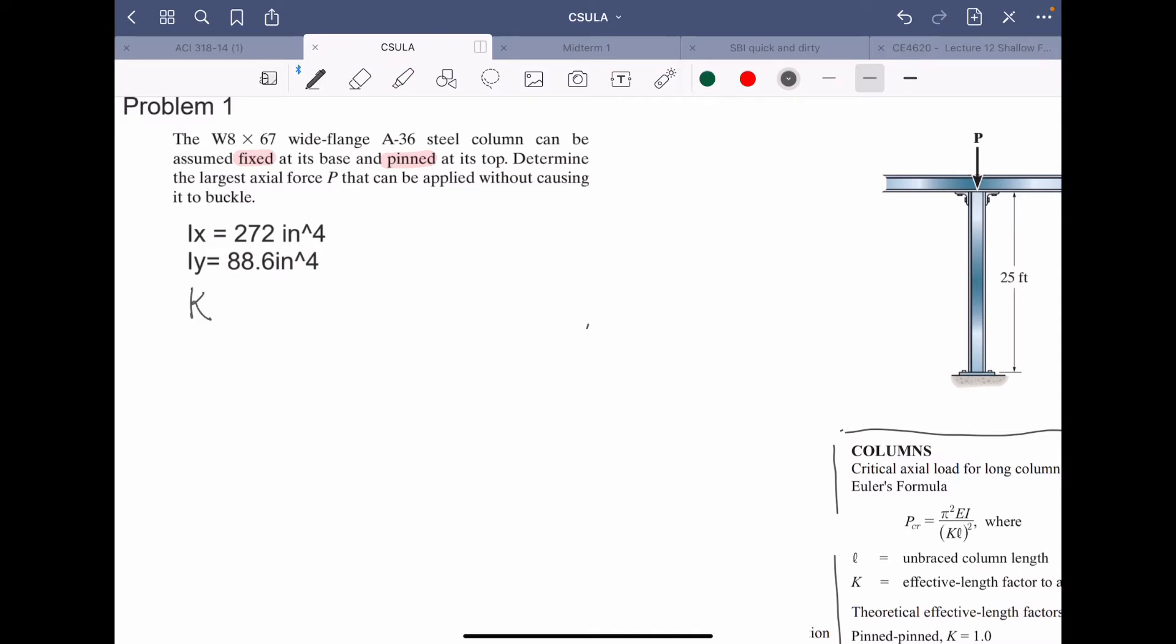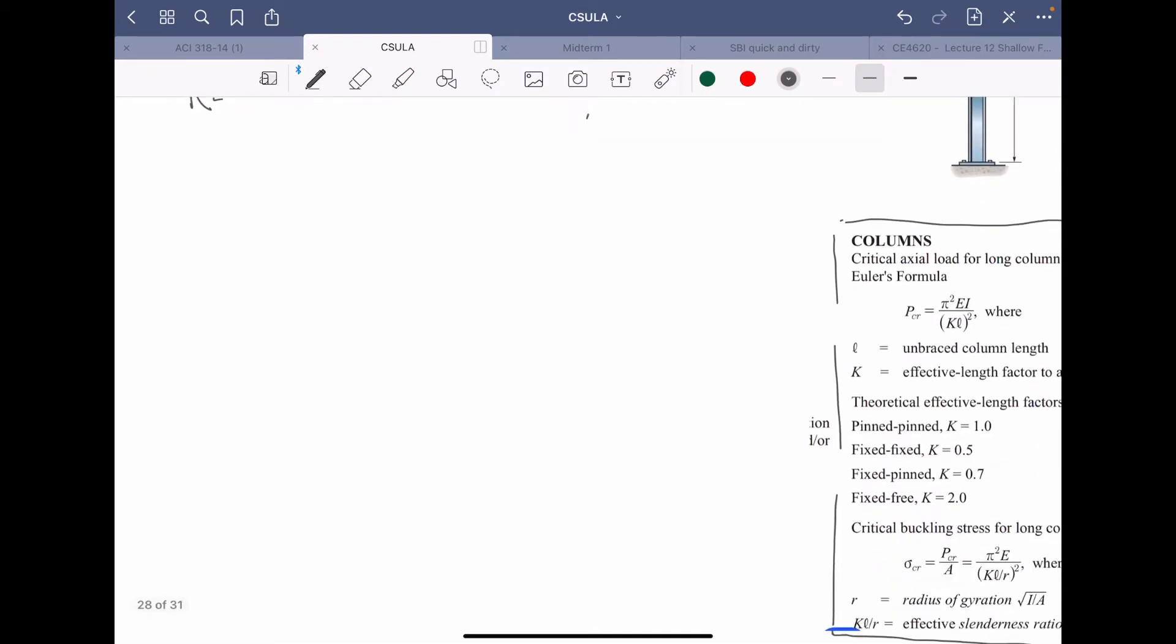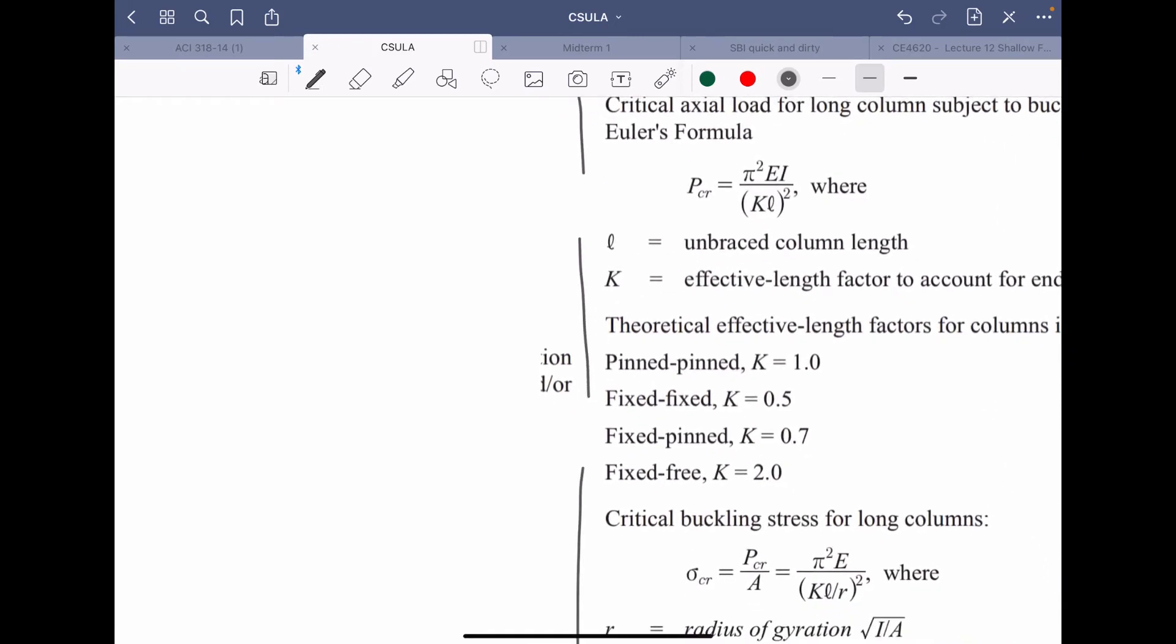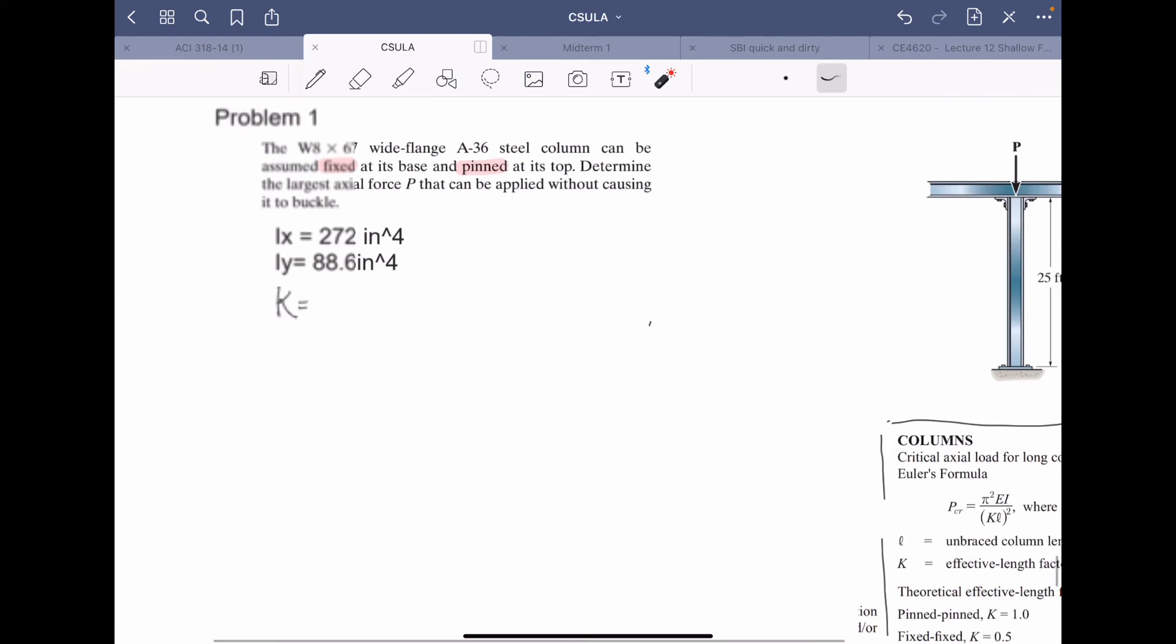That automatically tells us that we need to go and look for the K. So K is then equal to, they said fixed and pin right, fixed and pin which is 0.7. So what that means is I go ahead and do 0.7.